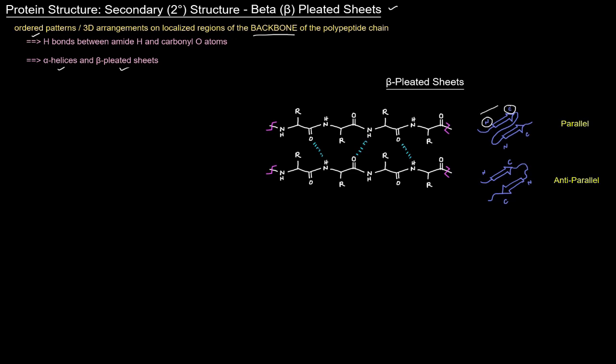When we have two sheets basically running in the same direction, we consider them parallel. And if they're running in opposite directions, we would consider them anti-parallel.